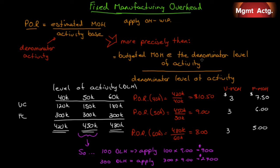What that means is: if we assume a certain level of activity as the activity base, our predetermined overhead rate will be one value. But if we assume a higher activity base, our estimated manufacturing overhead costs would also be higher because there's a variable component, giving us a different predetermined overhead rate. Let me show you with an example.